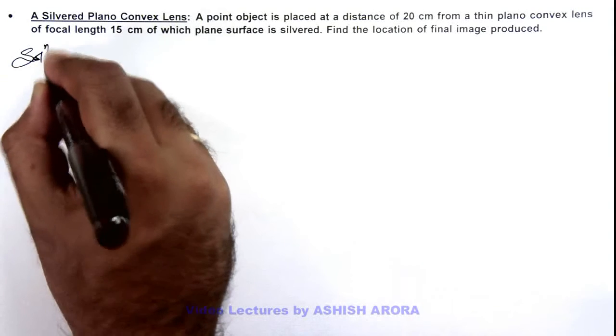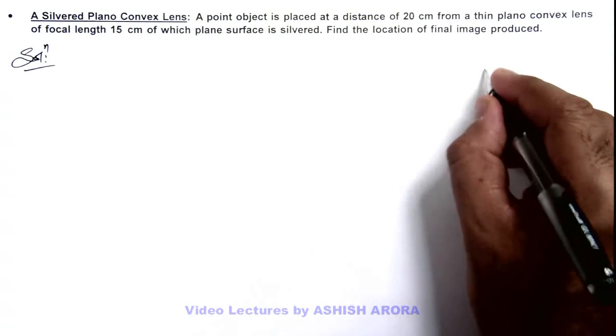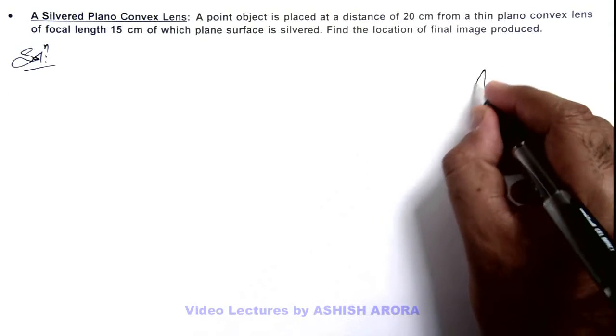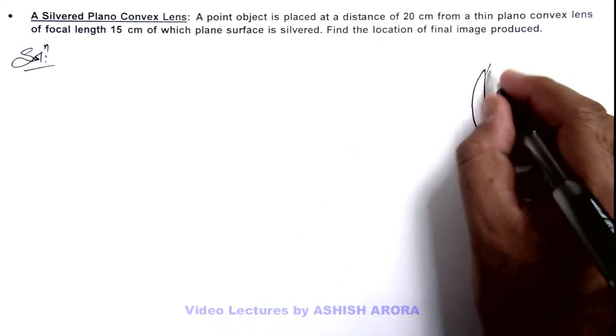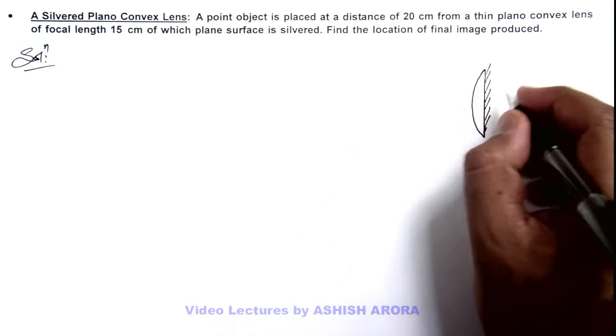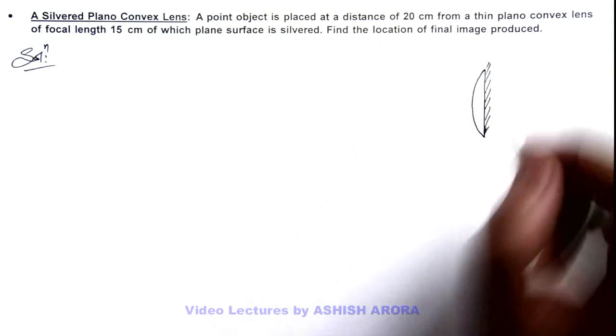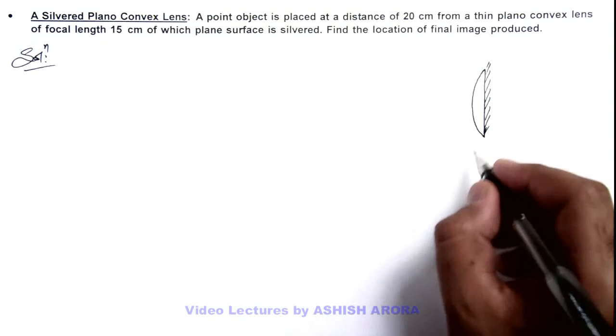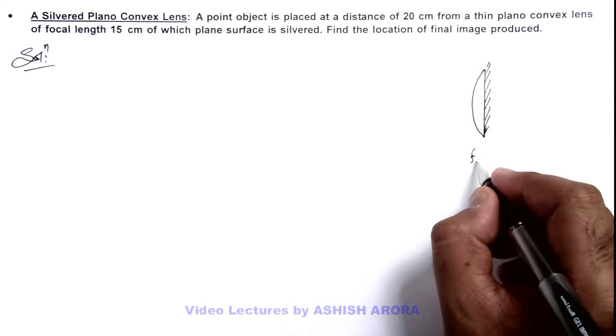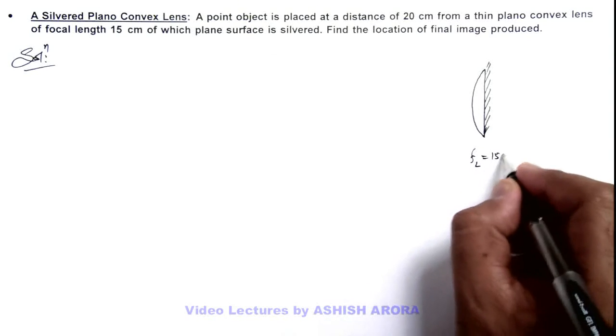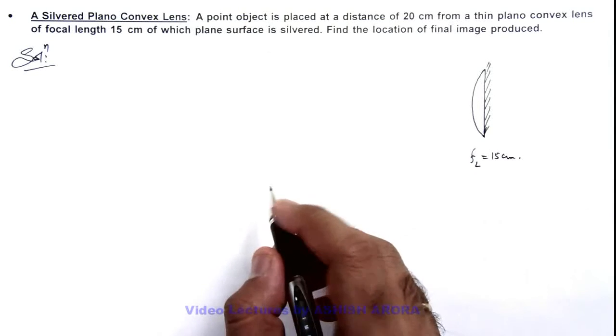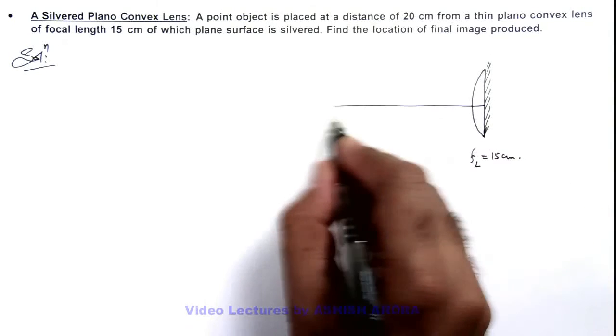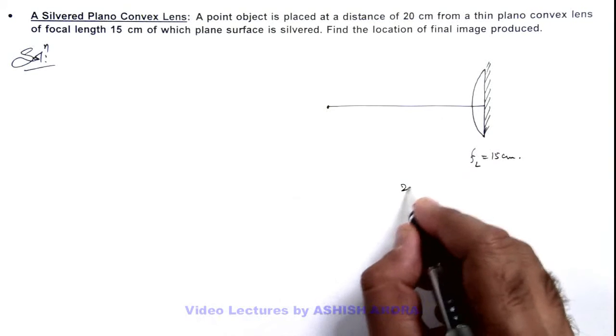Here we are given in solution that there is a plano-convex lens of which the plane surface is silvered, that is made reflecting. And in this situation, the focal length of the lens is 15 centimeter, and an object is placed at a distance of 20 centimeter from this lens.